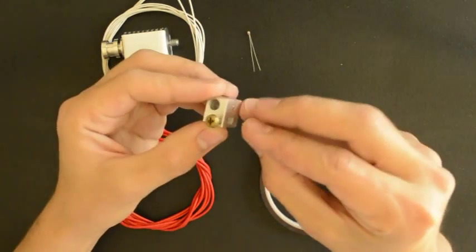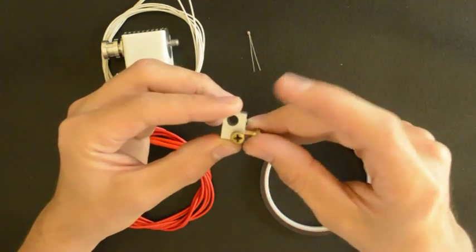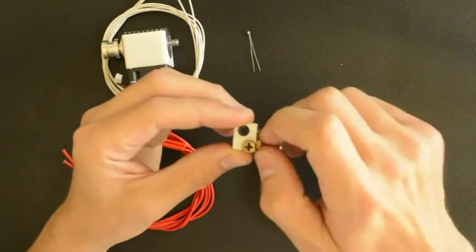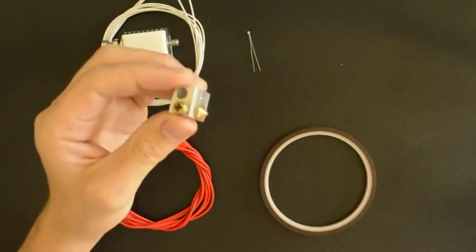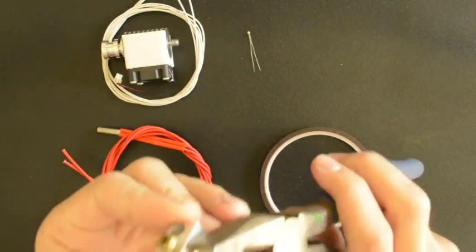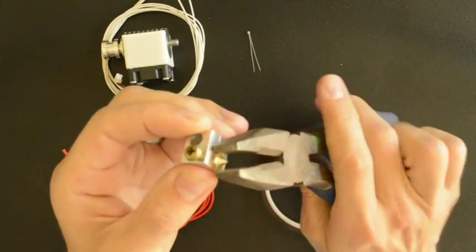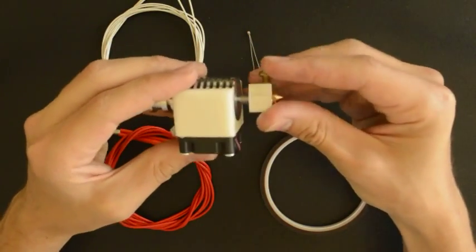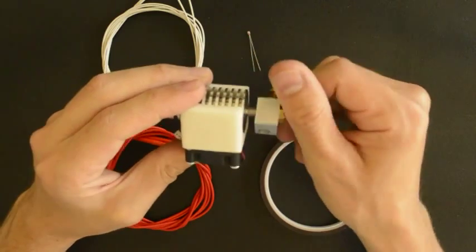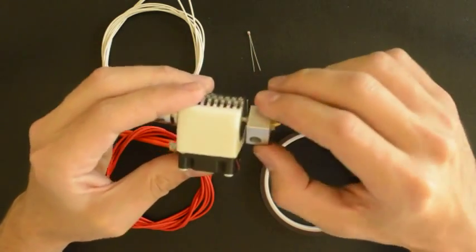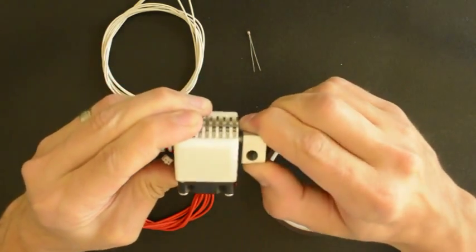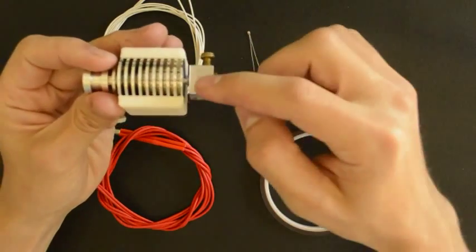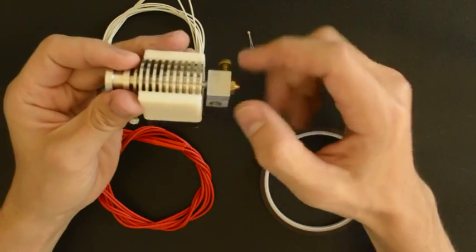So firstly what we will do is insert the nozzle and torque it a little bit. Then we will assemble it to the rest of the hot end. So this tube on the inside presses against the nozzle.